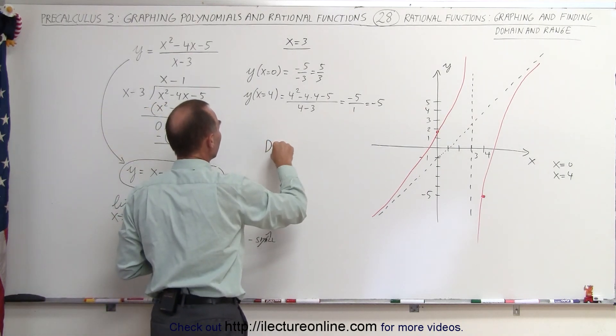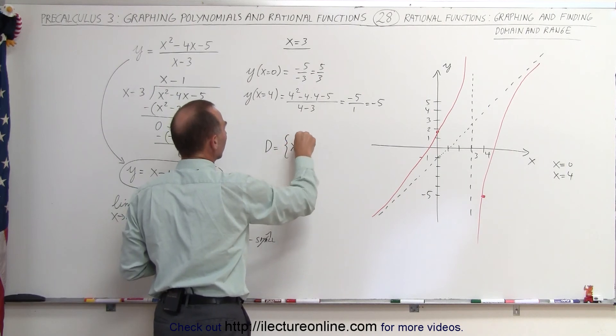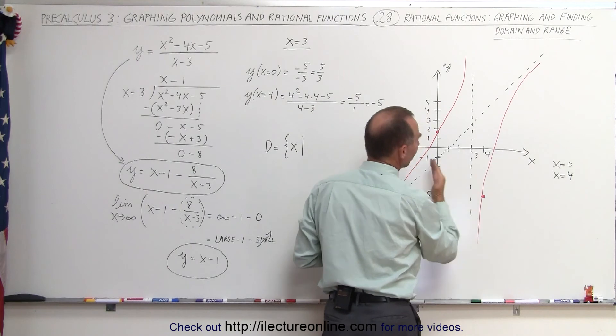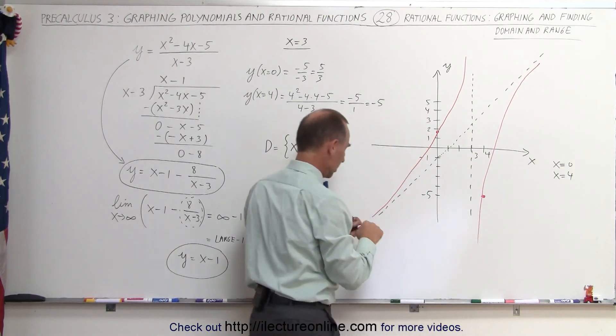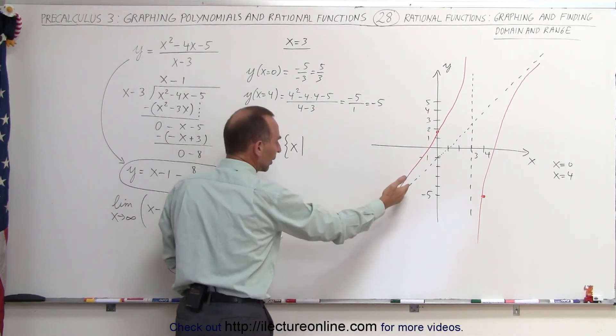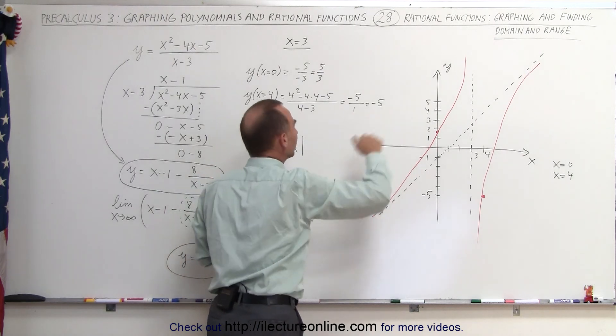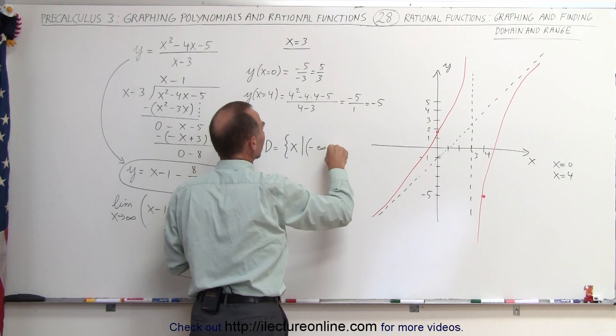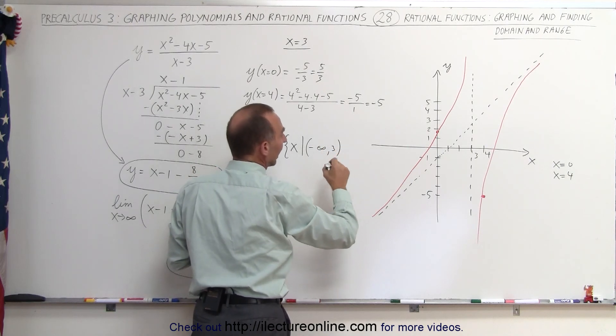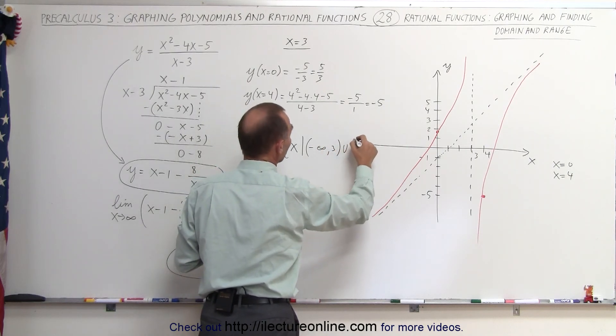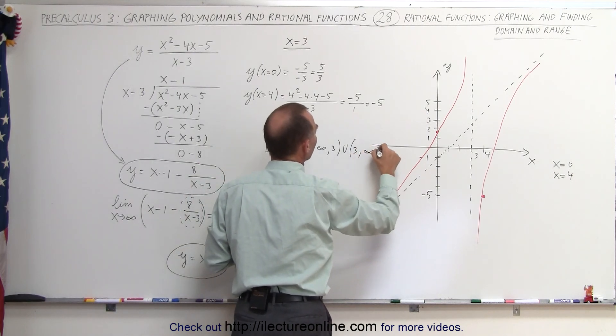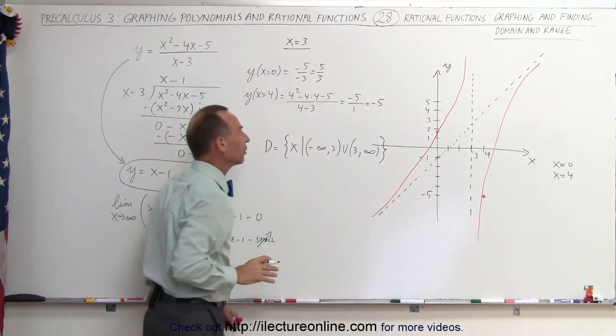The domain is equal to all x's such that, notice in the x direction, there's only one limiting value: x cannot equal 3. That means x can go all the way to negative infinity, all the way to positive infinity. So x is limited by going from minus infinity all the way to 3, and it's a union all the way from 3 all the way to positive infinity.